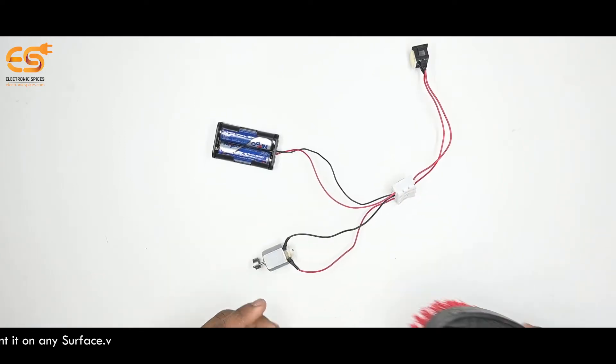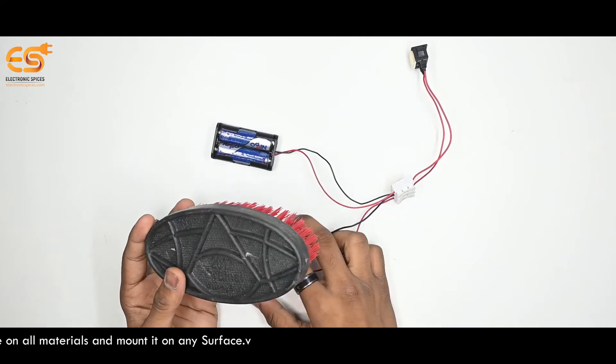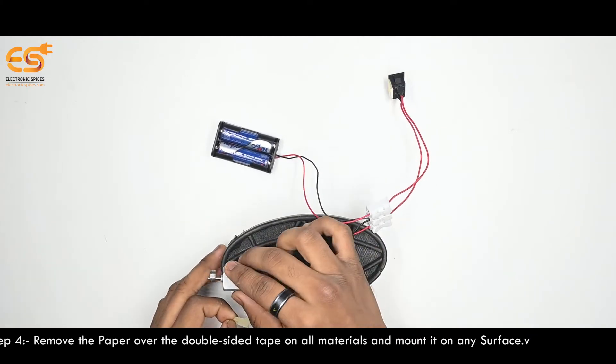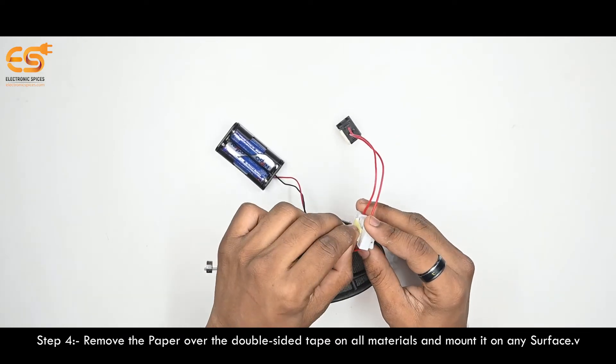Take a Clothing Brush to perform your experiment and remove double-sided tape on all surfaces of the material.